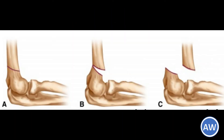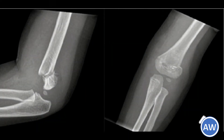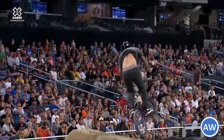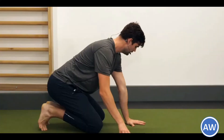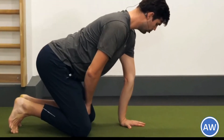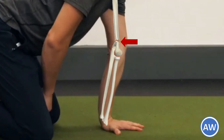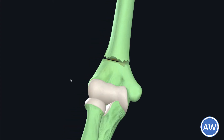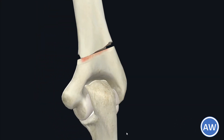The supracondylar fracture of the humerus is one of the most serious fractures in childhood, as it is often associated with complications. The fracture is caused by a fall on an outstretched hand. As the hand strikes the ground, the elbow is forced into hyperextension resulting in fracture of the humerus above the condyles. The fracture line extends transversely through the distal metaphysis of the humerus just above the condyles.